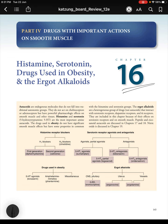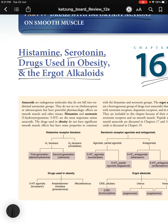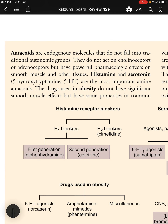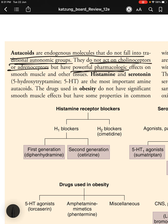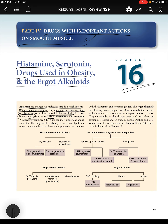Chapter 16 of Katzung's board reviews covers histamine, serotonin, drugs used in obesity, and the ergoalkaloids — all drugs with important actions on smooth muscle. Autocoids are endogenous molecules that do not fall into traditional autonomic groups; they do not act on cholinoceptors or adrenoceptors, but have powerful pharmacological effects on smooth muscle and other tissues.